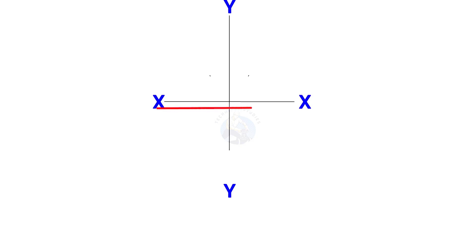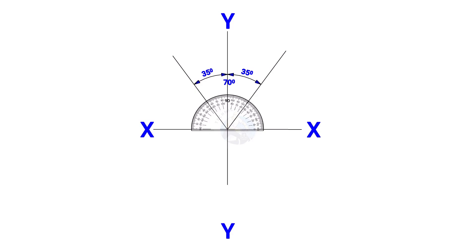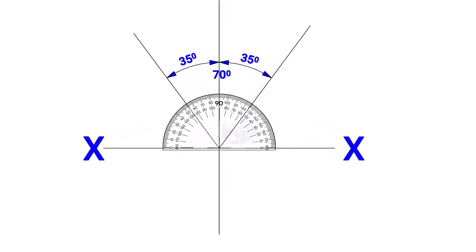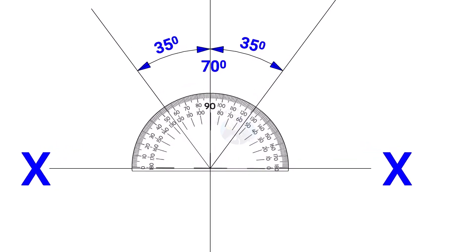Draw line XX and its perpendicular line YY. Since the including angle of the Y branch is 70 degrees, mark 35 degrees on both sides of the axis YY.